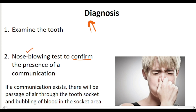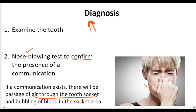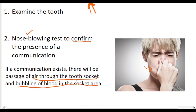One key diagnostic test involves having the patient close their mouth and blow through the nose — this is sometimes called the Valsalva test. The patient's mouth is closed and they blow. If there is communication, there will be passage of air through the tooth socket and bubbling of blood in the socket. If this happens, then we diagnose that oroantral communication is present.